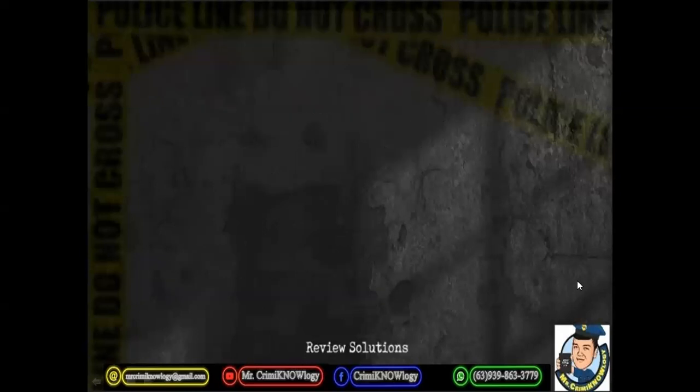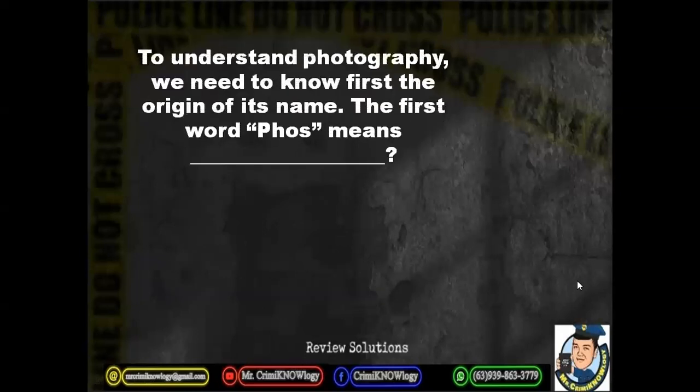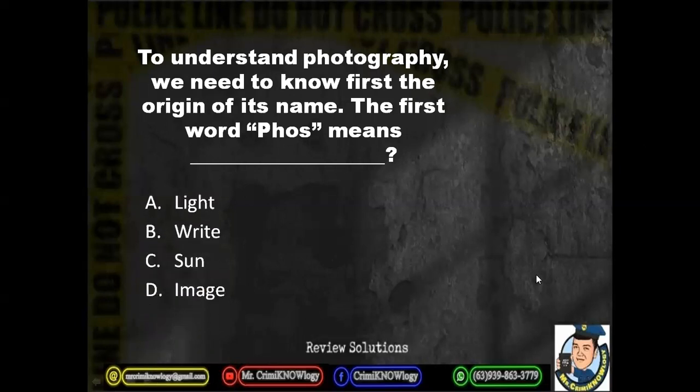Let's have the second question. To understand photography, we need to know first the origin of its name. The first word 'phos' means blank. A. Light. B. Right. C. Sun. D. Image.